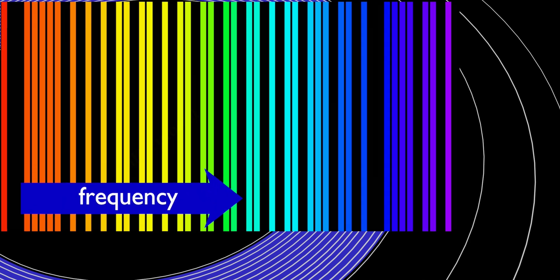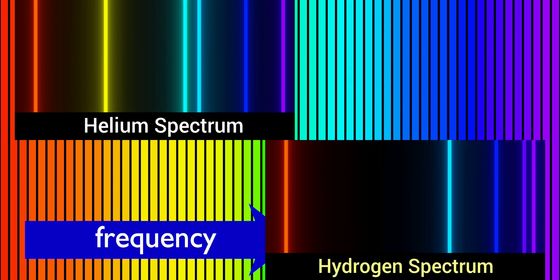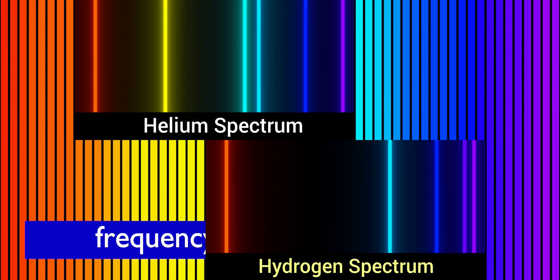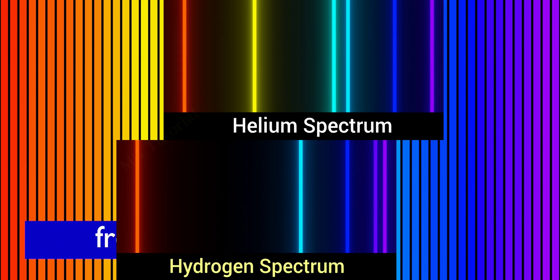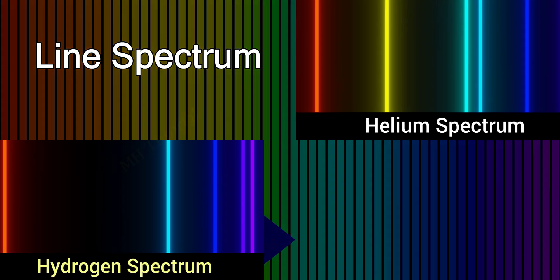Therefore, atomic spectrum should contain innumerable wavelengths and frequencies, which we call a continuous spectrum. And it looks like this. But sadly, this is not the spectrum what we observe. Actually, an atomic spectrum contains a limited number of wavelengths and frequencies, which looks like this. And it is called line spectrum.